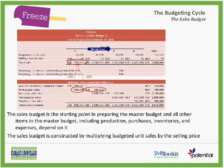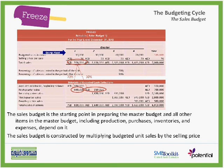A schedule of expected cash collection, such as the one that appears in the bottom portion of that schedule, is prepared after the sales budget. So we start with the sales budget.